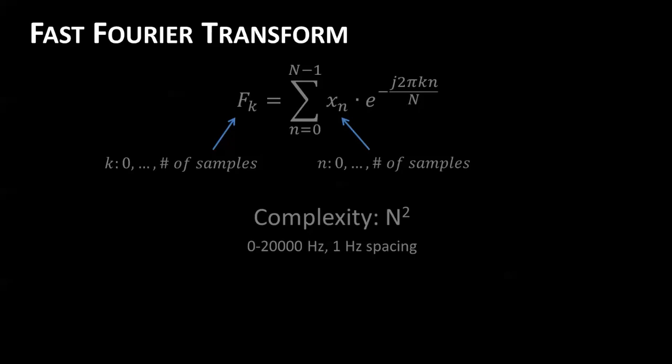If we, for instance, want to do something reasonable like a chart zero to 20,000 hertz with one hertz spacing, that's going to end up with 400 million operations. And say you can do one operation a minute, that'll end up, you'll end up with 760 years in order to compute that.